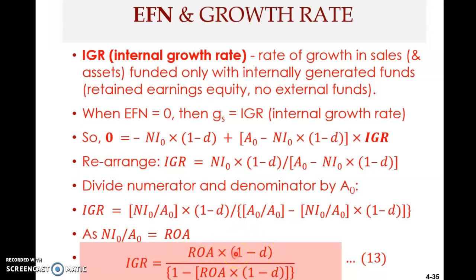The book uses ROA multiplied by b, where b is the retention ratio. The retention ratio and the dividend payout ratio are opposites: (1 minus d) is the retention ratio, and d is (1 minus b). I prefer using d because in a problem the dividend payout ratio is usually given rather than the retention ratio.